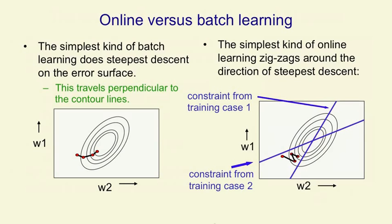If we then consider the other training case, we'll move perpendicularly towards the other line. And if we alternate between the two training cases, we'll zigzag backwards and forwards, moving towards the solution point, which is where those two lines intersect. That's the set of weights that is correct for both training cases.